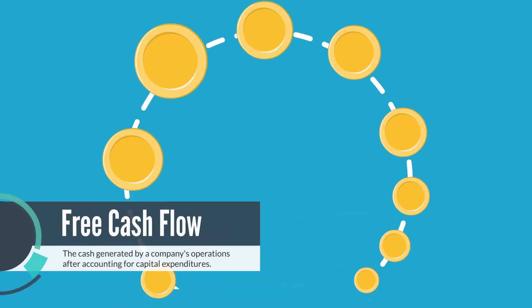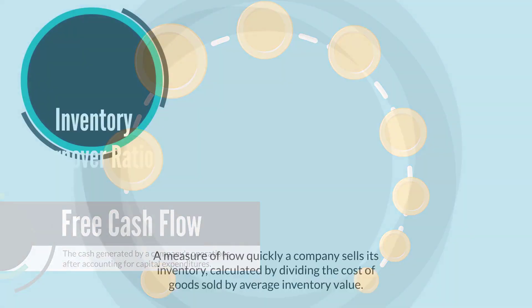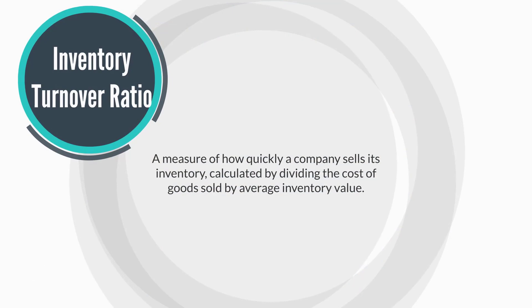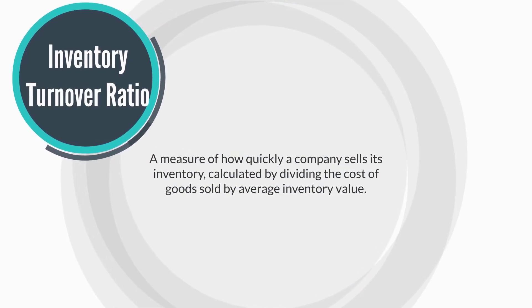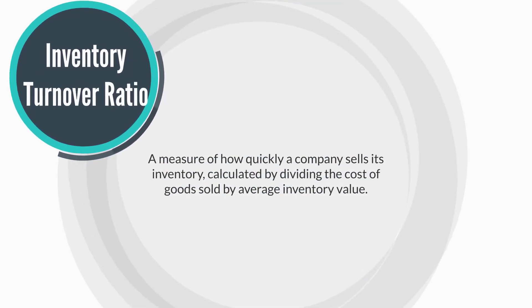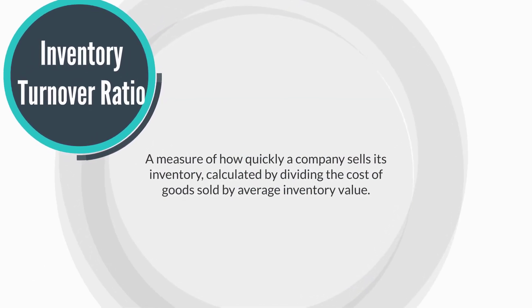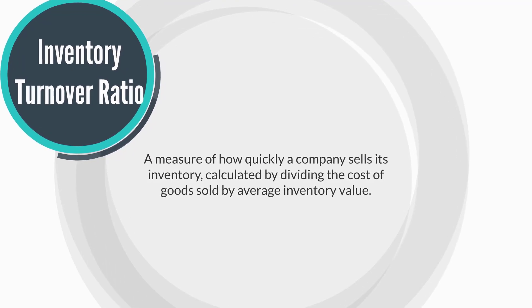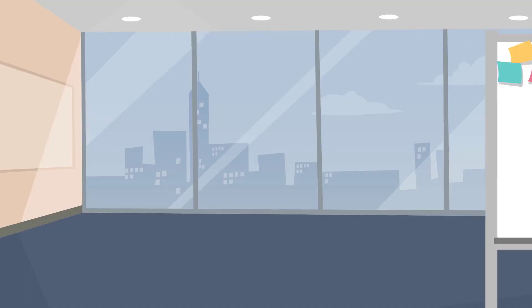Free cash flow: the cash generated by a company's operations after accounting for capital expenditures. Inventory turnover ratio: a measure of how quickly a company sells its inventory, calculated by dividing the cost of goods sold by average inventory value.